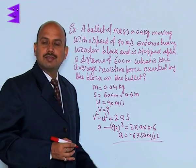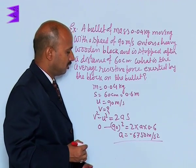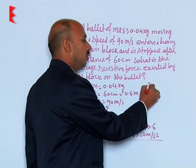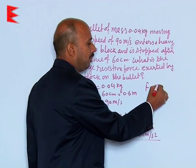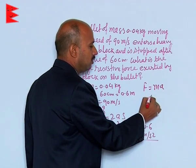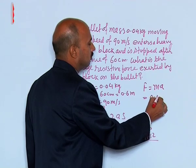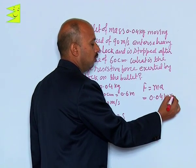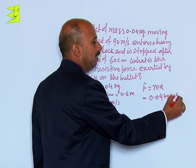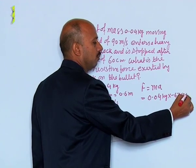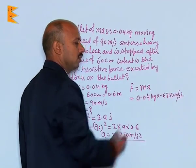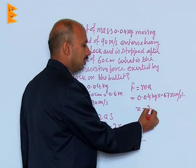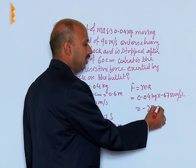The negative sign indicates retardation. Now, F equals M into A, so F equals 0.04 kg into minus 6750 meters per second squared, which gives minus 270 Newtons.